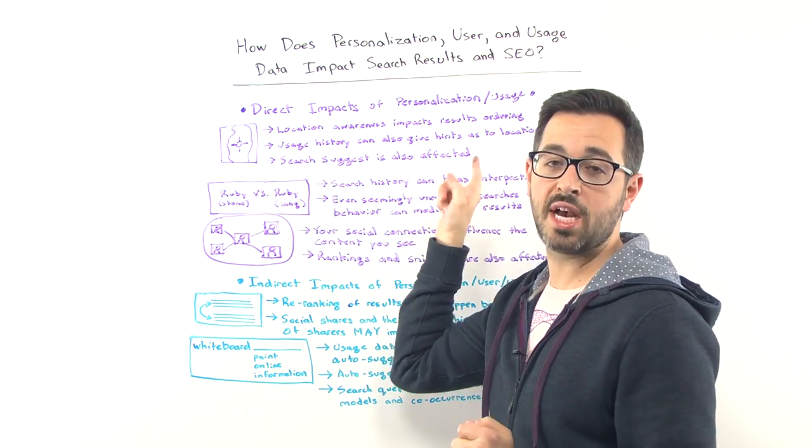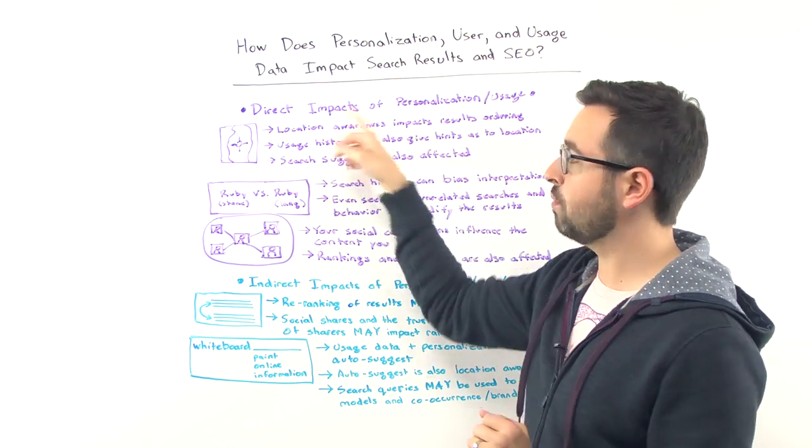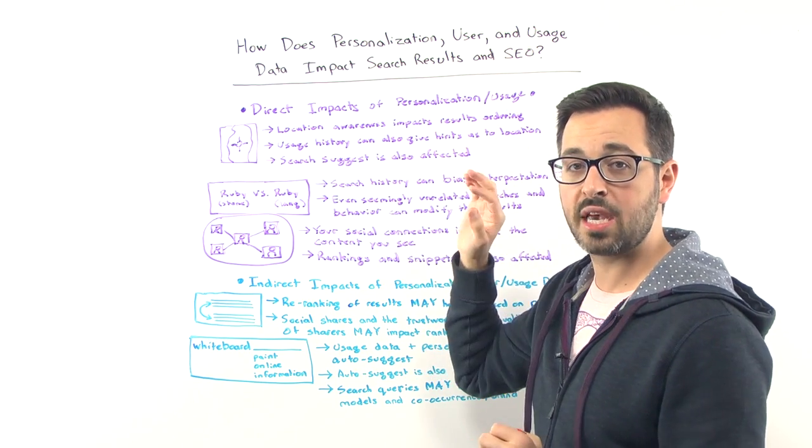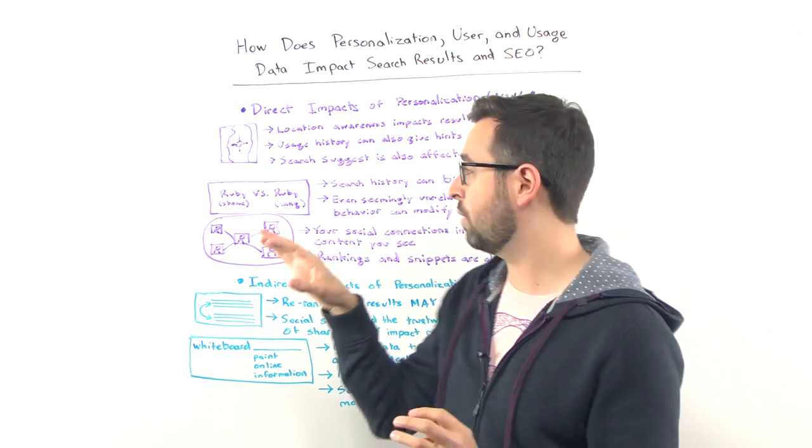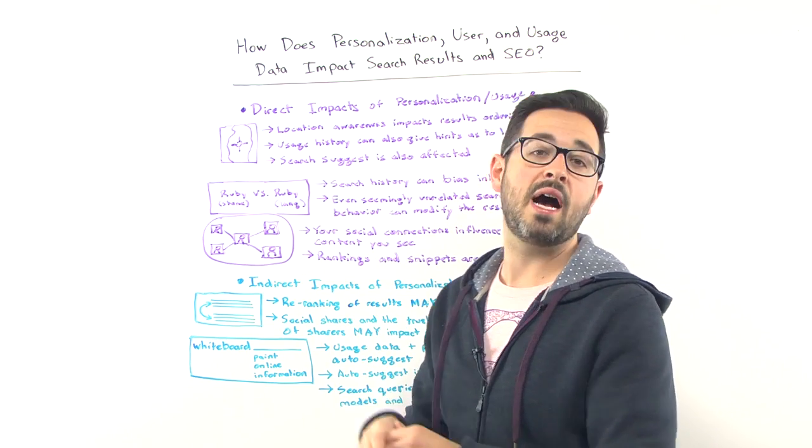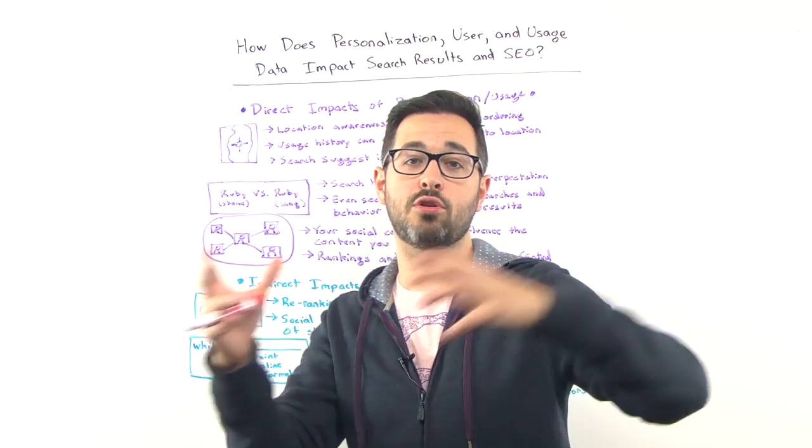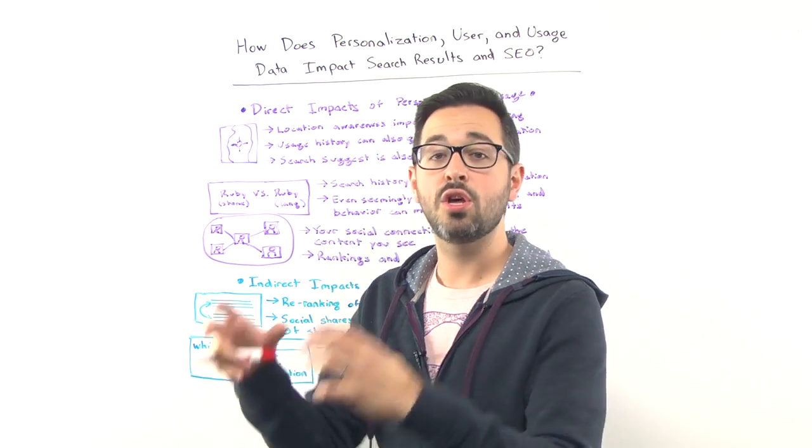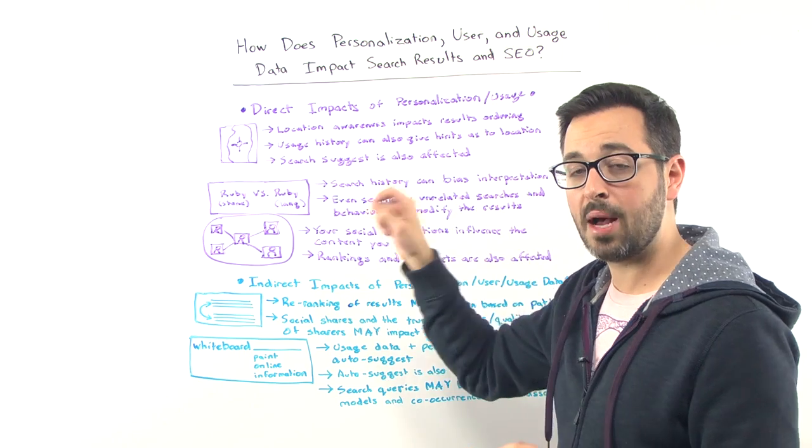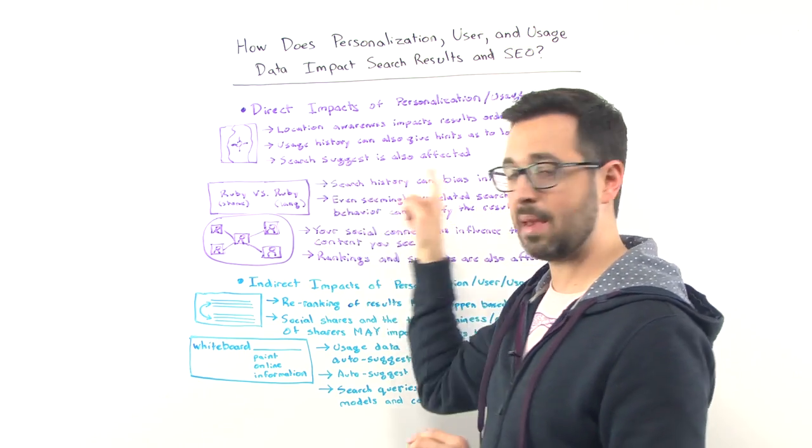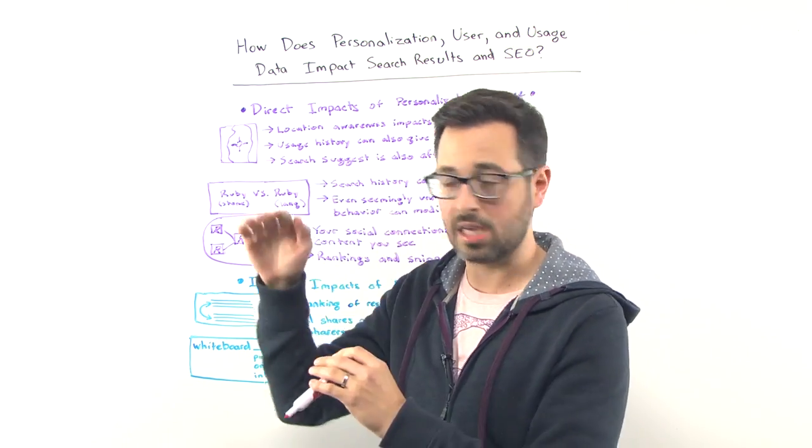And do be aware, search suggest is also affected directly by personalization types of results. So if you are doing a search that is going to be biased by some element of personalization, either your search history, your location, those kinds of things, auto suggest will come up with those same biases as the rankings might.